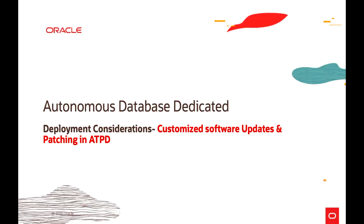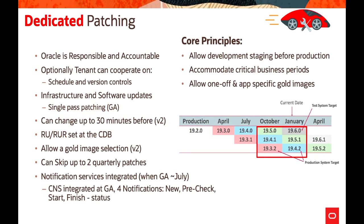Now we look at unique features available on Autonomous Dedicated. One is customized software updates and patching. Oracle is responsible for all software update operations; the database is continuously available to applications and updates are applied rolling across RAC nodes and ExaData storage servers. The best practice is to use Application Continuity to run without interruption. Quarterly patches or on-demand updates for critical security issues are available on Dedicated.